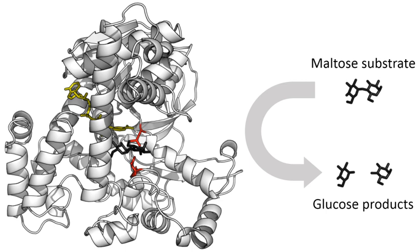Enzymes can accelerate reactions in several ways, all of which lower the activation energy by stabilizing the transition state: creating an environment with a charge distribution complementary to that of the transition state; providing an alternative reaction pathway; temporarily reacting with the substrate, forming a covalent intermediate to provide a lower energy transition state; distorting bound substrates into their transition state form to reduce the energy required; and orienting the substrates into a productive arrangement to reduce the reaction entropy change. Enzymes may use several of these mechanisms simultaneously. For example, proteases such as trypsin perform covalent catalysis using a catalytic triad, stabilize charge buildup on the transition states using an oxyanion hole, and complete hydrolysis using an oriented water substrate.